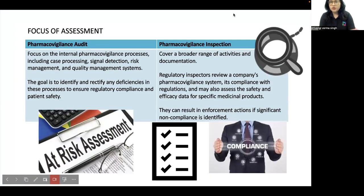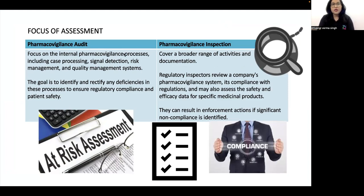In terms of what assessment is done: for audits, the focus is on internal pharmacovigilance systems and processes, including case processing, signal detection, risk management, and quality management systems. The goal is to identify and rectify any deficiencies to ensure regulatory compliance and patient safety. Pharmacovigilance inspections cover a broader range of activities and documentation, where regulatory inspectors review a company's pharmacovigilance system and compliance with regulations, and may also assess safety and efficacy data for specific medicinal products.